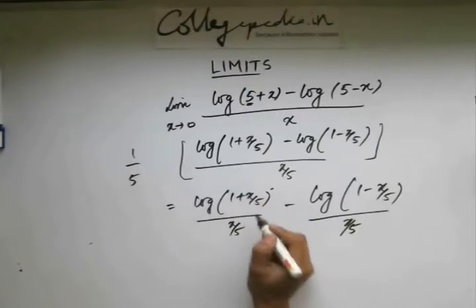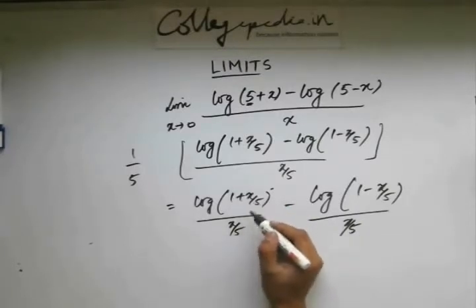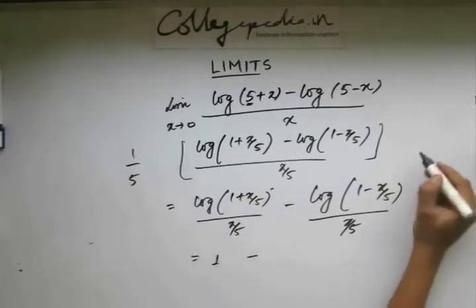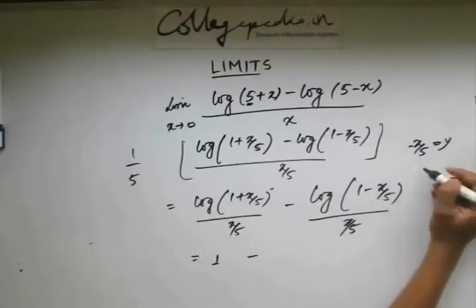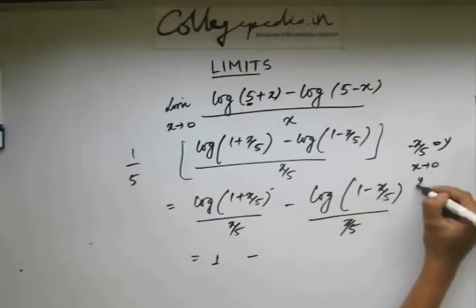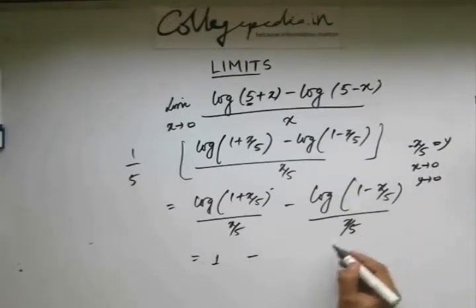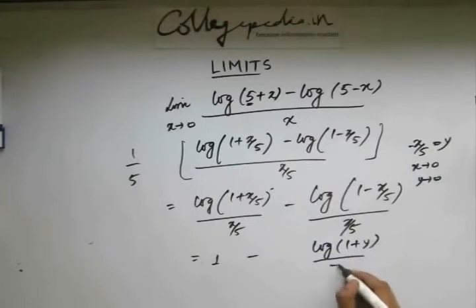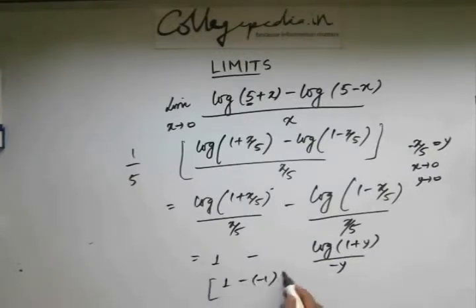This, you know, is 1. Let's take x by 5 as y. So log 1 plus y by y. Since x is approaching 0, y also approaches 0, so this is 1. Now let's take minus x by 5 as y. Since for this case, let's take minus x by 5 as y. So as x approaches 0, y approaches 0 for sure. So it becomes of the form log 1 plus y by - x by 5 will be minus y. So this is what? This is minus 1. So it's 1 minus minus 1. I have a 1 by 5 factor here, so it's like 2 by 5. 2 by 5 is the answer to this question.